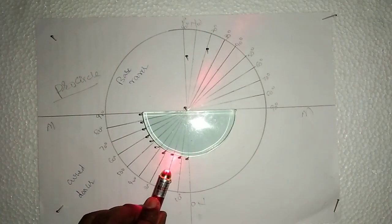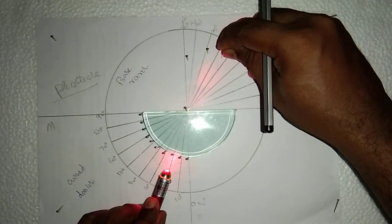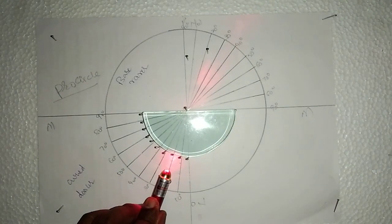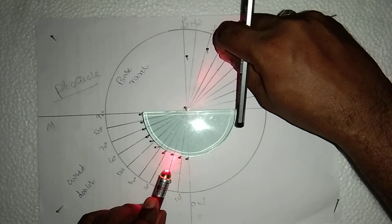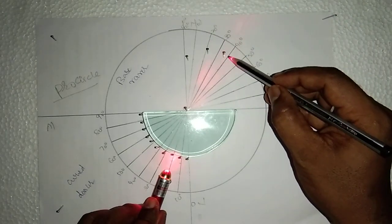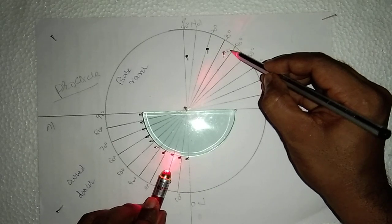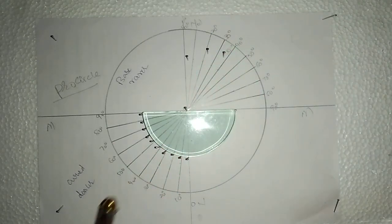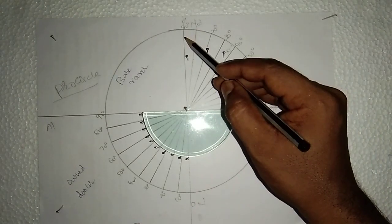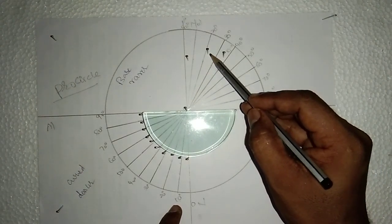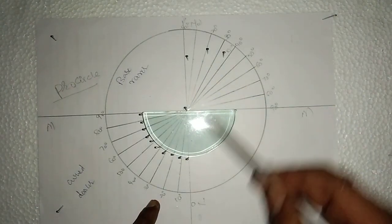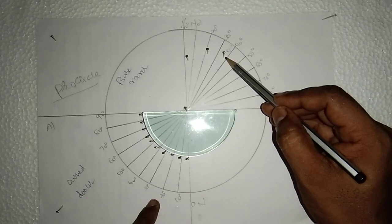Pass the laser light at an angle of 20 degrees. If you pass the laser light at 20 degrees and identify the angle of refraction, the angle of refraction is approximately 35 degrees. For angle of incidence 0 degrees, angle of refraction is also 0. For 10 degrees, it may be 21 degrees. For 20 degrees, angle of refraction is 35 degrees.